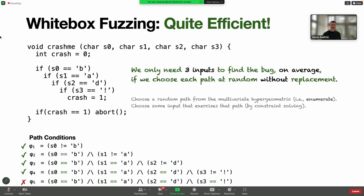It's also quite efficient. If we have these five paths in the program and sample a path at random without replacement, we would expect to take about three inputs to find that crashing bug using white box fuzzing.